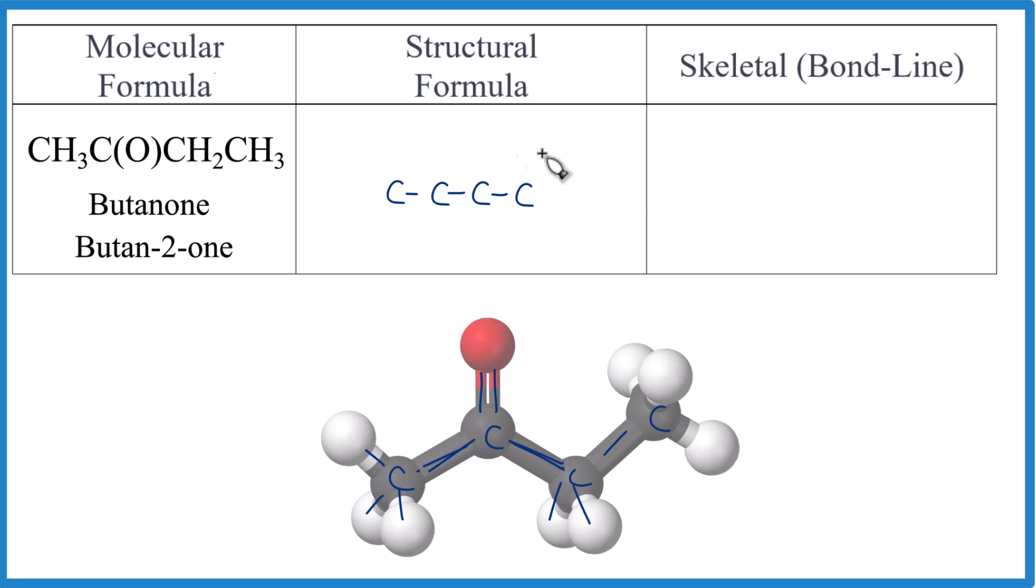So that helps us with our structural formula for butan-2-one. So I'm going to put that double bonded oxygen right here on the second carbon. Then I'll put the hydrogens in. So that's the structural formula for butanone here. We have four carbons, double bonded oxygen. And each carbon only has four bonds. If you count everything up, it'll match what we have here.